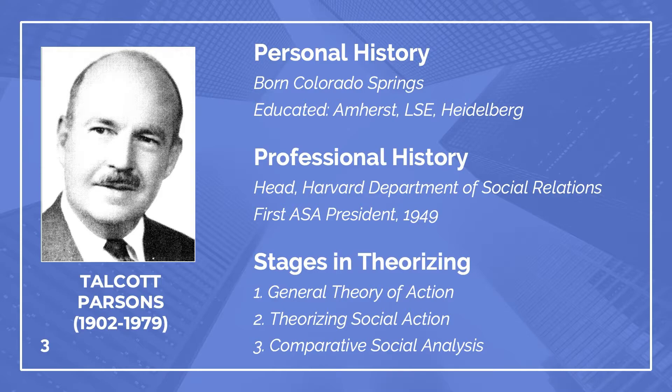Parsons is a crucially important figure in the history of American sociology, elected president of the American Sociological Association in 1949. Parsons referred to himself as an incurable theorist. Despite changes in the various stages of his career, theorizing general dynamics and social structure remains paramount. Here I will emphasize the different courses Parsons took, but they were all in the same general direction. In the first stage — the general theory of action — the goal is coming up with the basic structures of any and all forms of action.